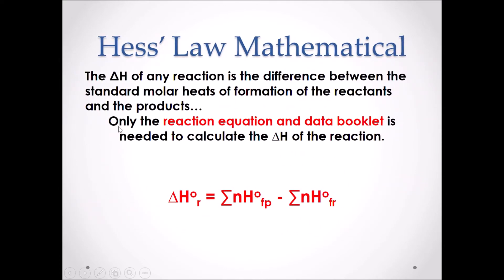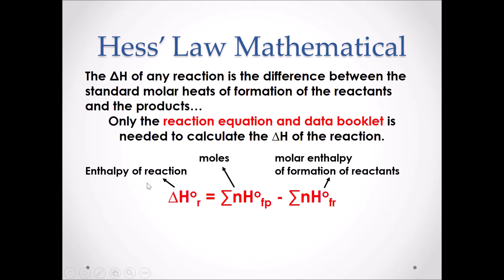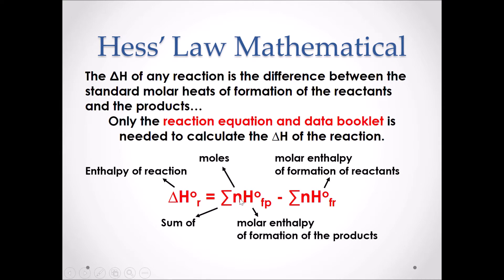Hess's Law Mathematical states that the enthalpy change of any reaction is the difference between the standard molar heats of formation of the reactants and the products. Only the reaction equation and your Chemistry 30 data booklet are needed to calculate the ΔH of any reaction. The equation is: ΔH equals the sum of moles times the molar enthalpy of formation of the products, minus the sum of moles times the molar enthalpy of formation of the reactants. Remember, Hess's Law Mathematical is always products minus reactants.